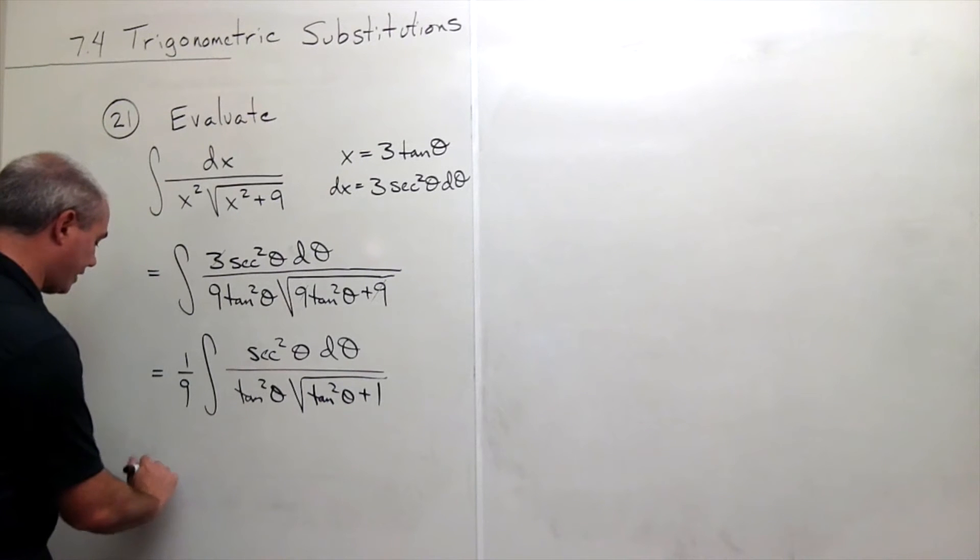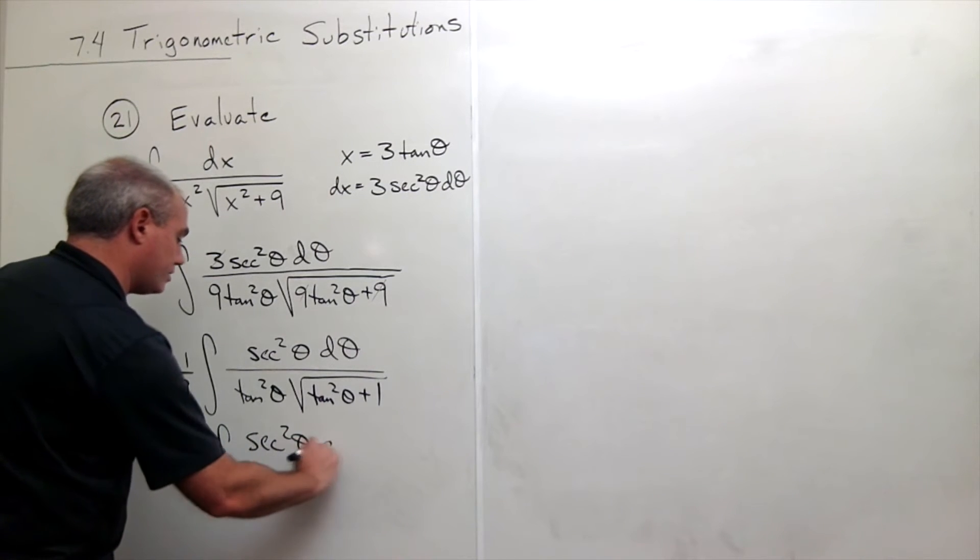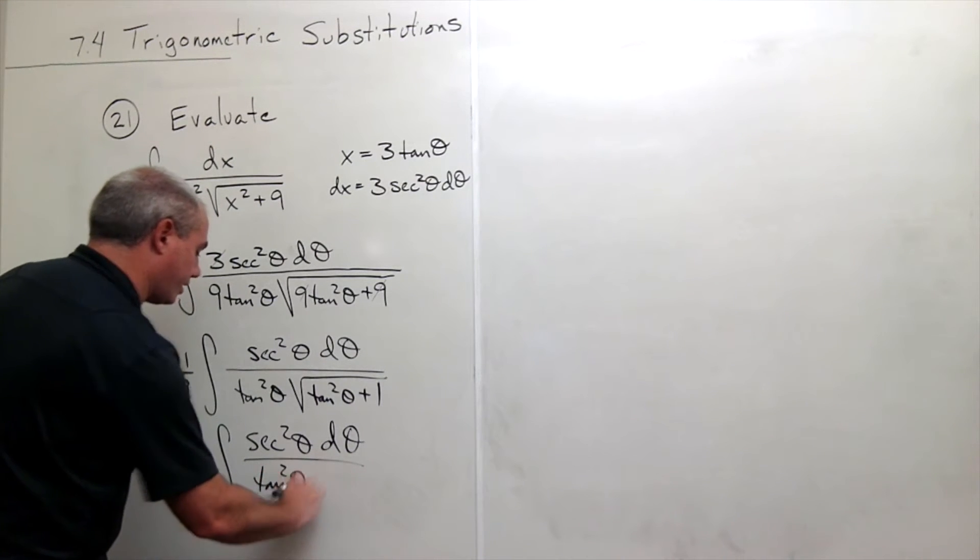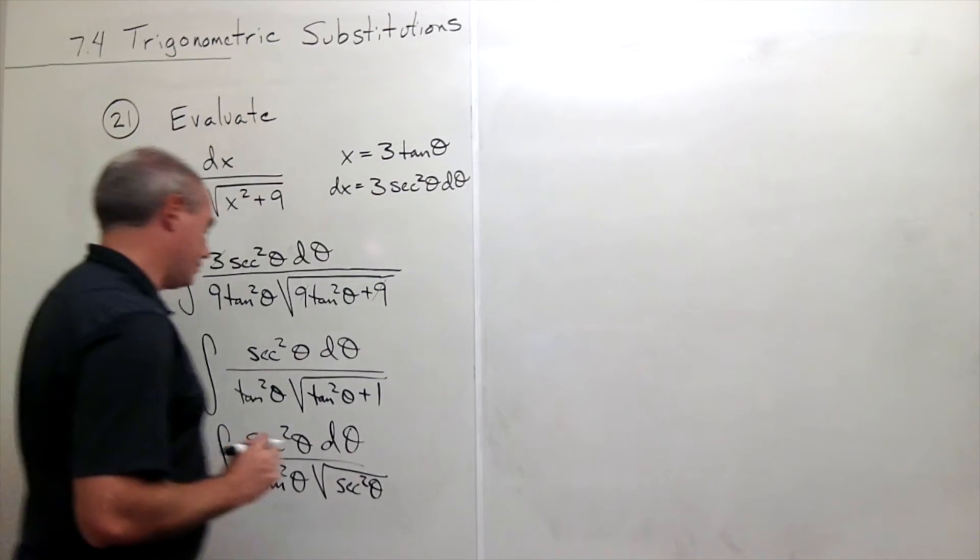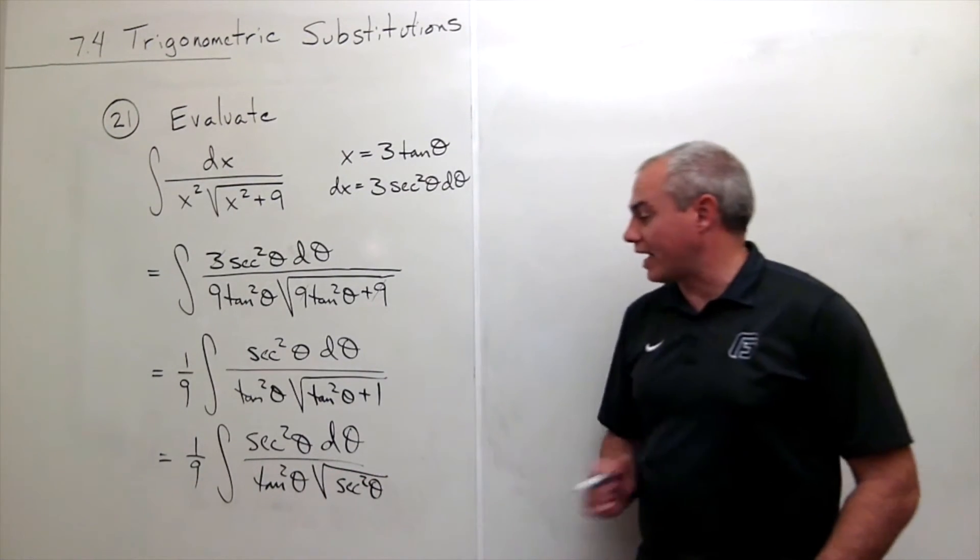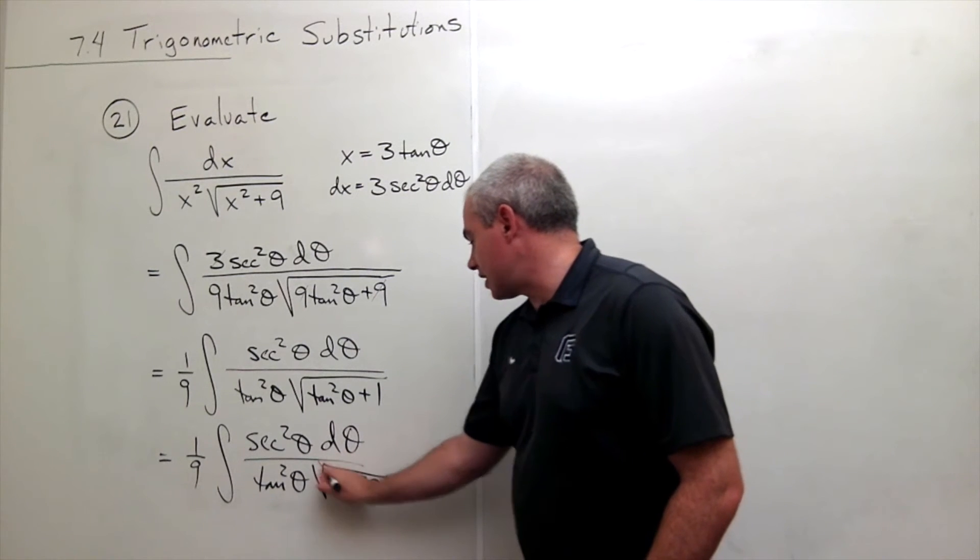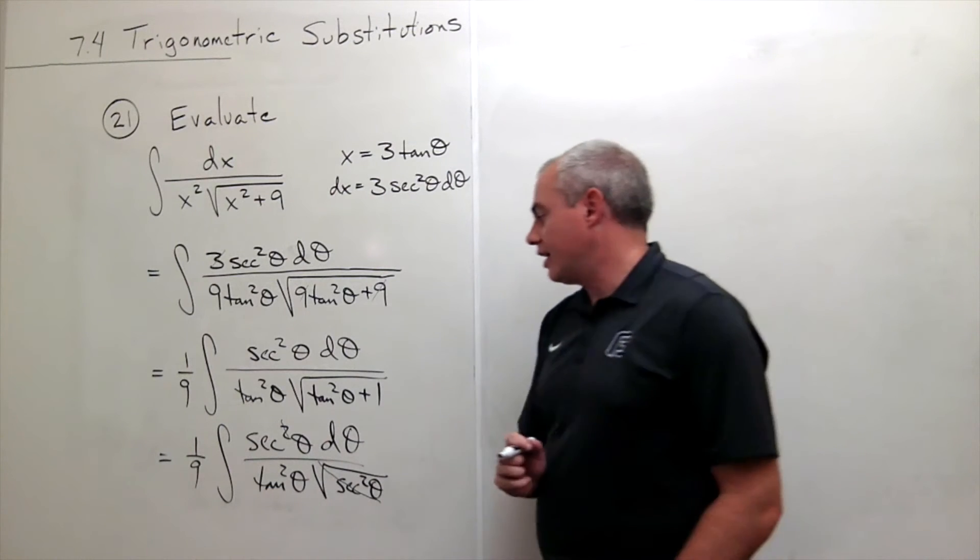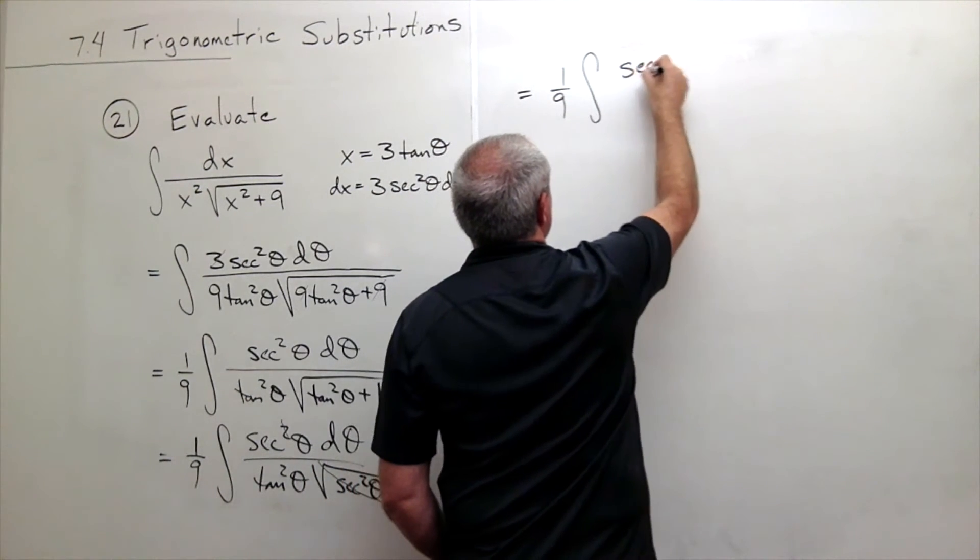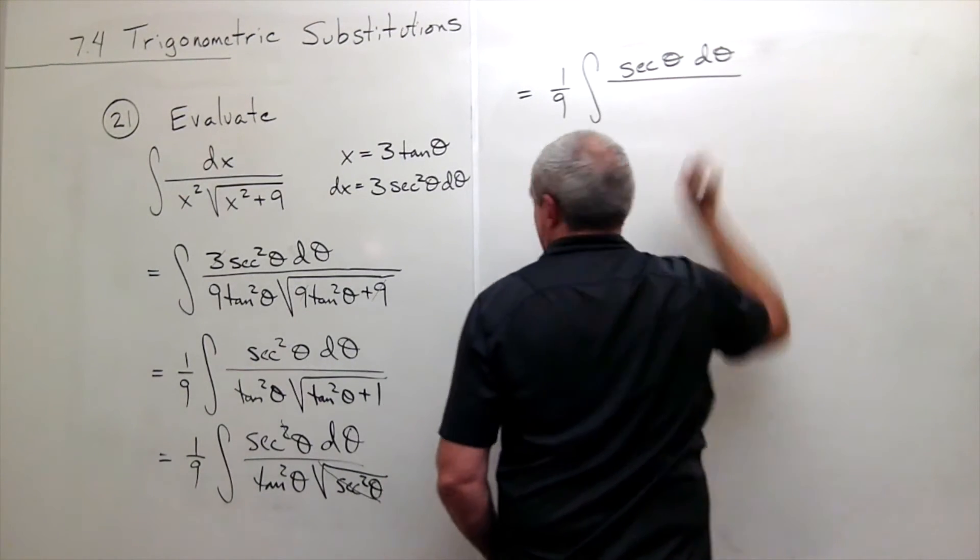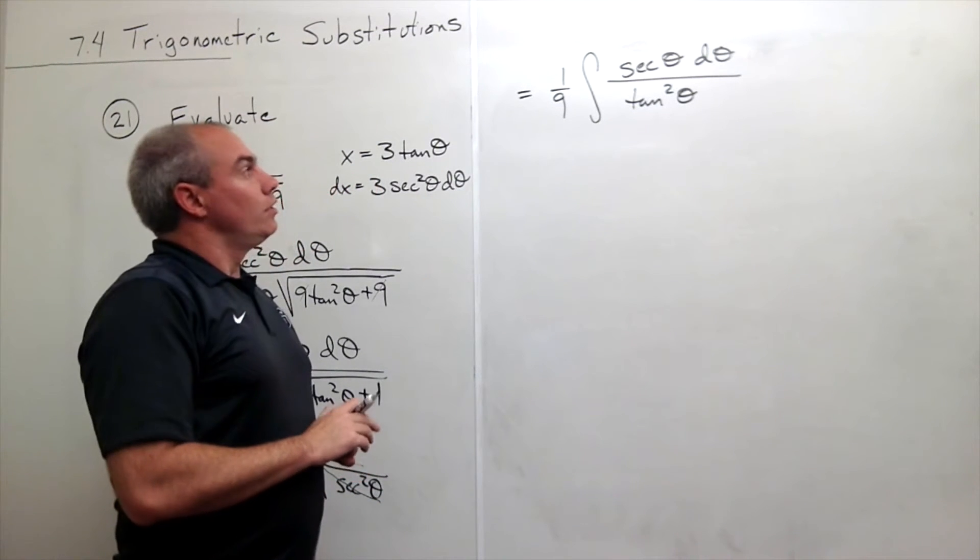I can rewrite this as 1 9th integral of secant squared theta, d theta, divided by tangent squared theta times the square root of secant squared theta. Now obviously the square root of secant squared theta is just a secant of theta. So one secant of theta here cancels one of the secant thetas on top. So in some sense this whole guy cancels one of those secant thetas. Up here I get a 9th integral of, I have a secant of theta, d theta, on top. And on the bottom now I just have tangent squared theta.